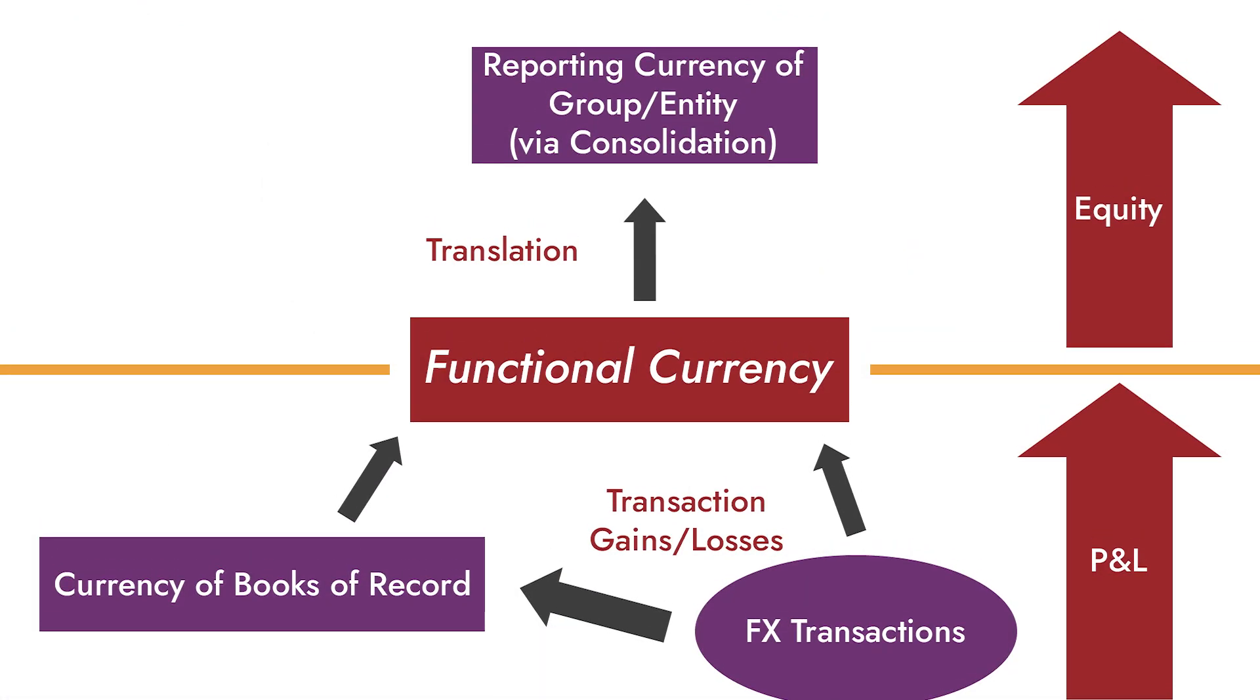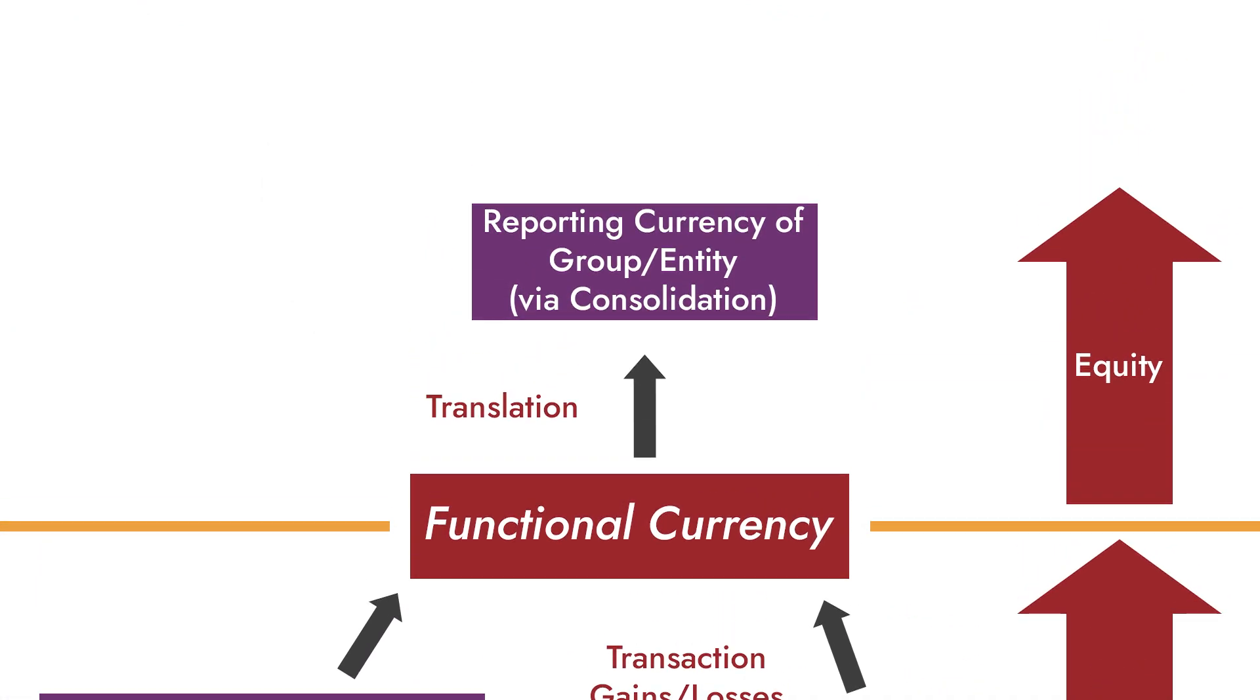Translation. That's at the top of the flow chart. If an entity is consolidating and the reporting entity's currency is different from its functional currency, it has to do what's called a translation.